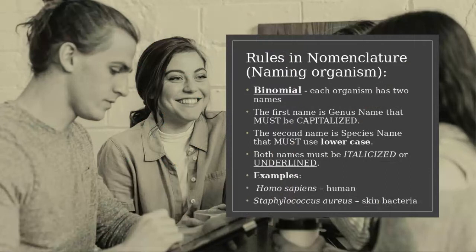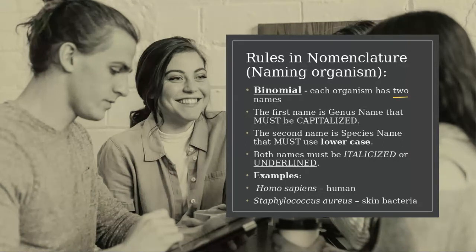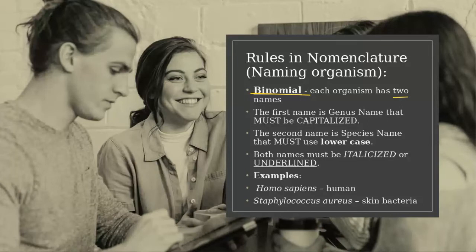The next topic is about the rules for naming organisms, called nomenclature. Each organism has two names — this is very important. This system is called the binomial system. Bi means two, nominal means name, so it is the system that gives two names to each organism. The first name is the genus name, and it has to be capitalized — it must start with a capital letter.